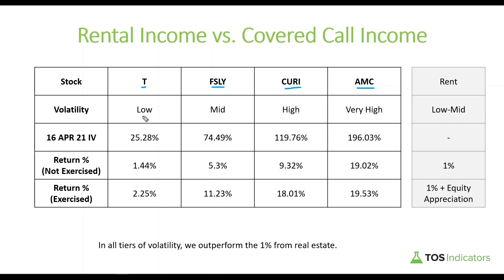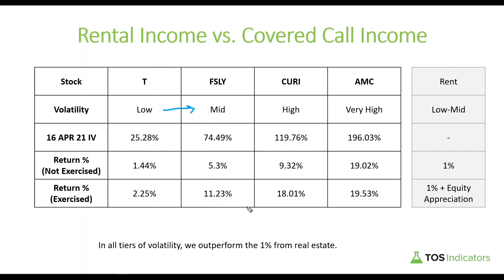Going through the table: AT&T is at the lowest end of this volatility tier at 25 implied volatility. The return percentage if we're not exercised — keeping just the premium — is 1.44 percent, still greater than the one percent we see in rent. If the shares are actually exercised, that return percentage goes up to 2.25 percent, and this is for approximately 25 days to expiration. Moving up to the mid volatility tier, Fastly has an implied volatility of 74.49 percent. The return percentage if not exercised is 5.3 percent, and if the calls are assigned, that jumps to 11.23 percent.